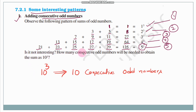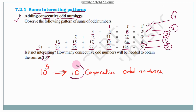How many consecutive odd numbers are needed to obtain the sum as 10³? Since n³ requires n consecutive odd numbers, 10³ requires 10 consecutive odd numbers.